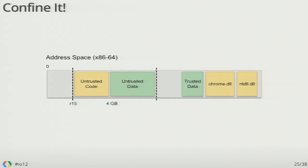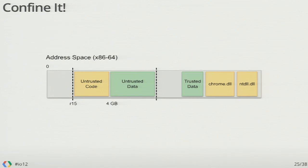What we need to do is make sure all execution and data access that can be done directly by untrusted code only happens within a confined region that doesn't include NTDLL, Chrome DLL, or any code or data that could be used as an exploit. On 64-bit systems, this is a 4-gigabyte range of memory, and we reserve one of the registers, R15, to point to the bottom of this range. One of our security-critical properties is that R15 cannot be overwritten by the untrusted code. As the validator goes through, it looks for anything that can modify R15, and if something does, it rejects the program. Also, this 4-gigabyte range happens to be 2 to the 32, which allows us to do some clever stuff to make our masking as small as possible.